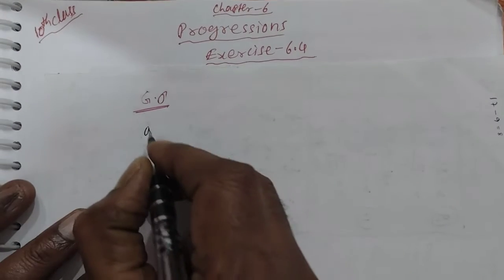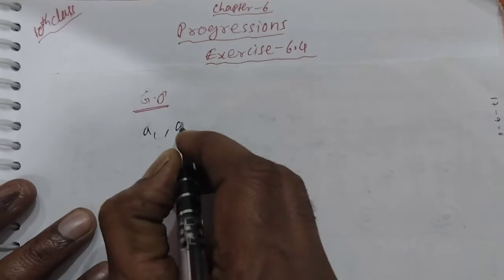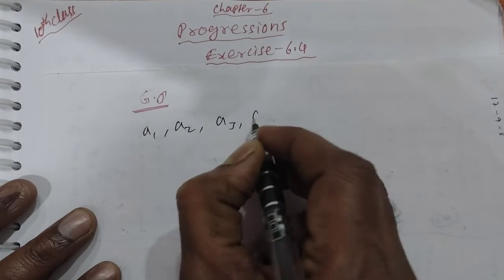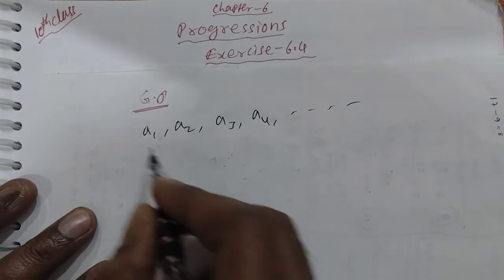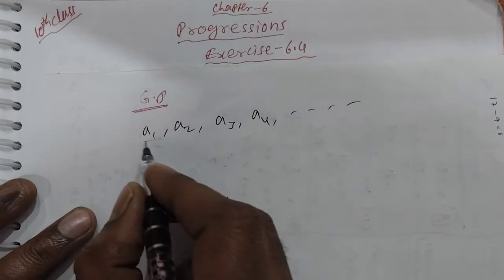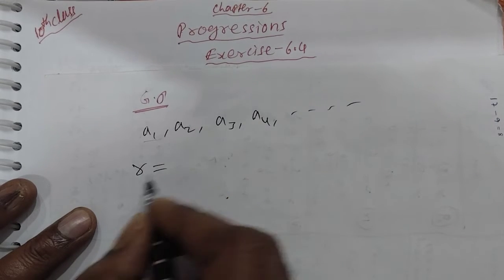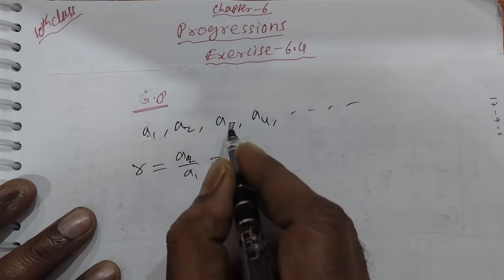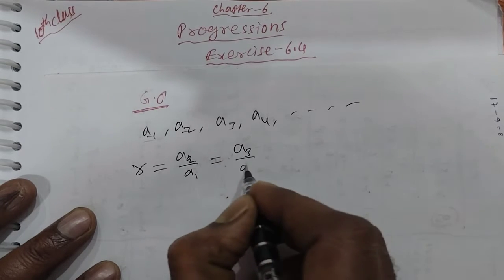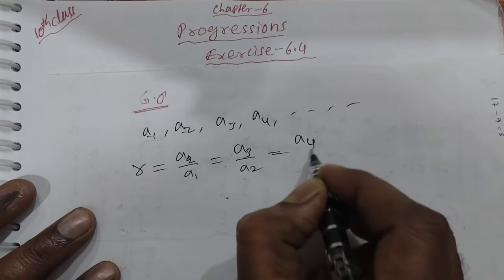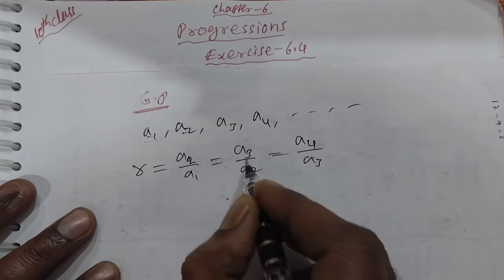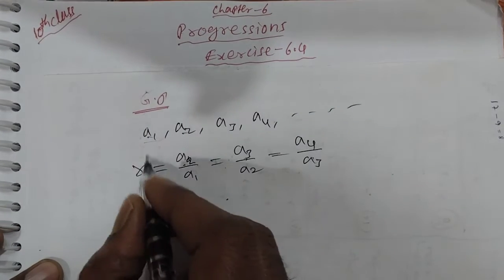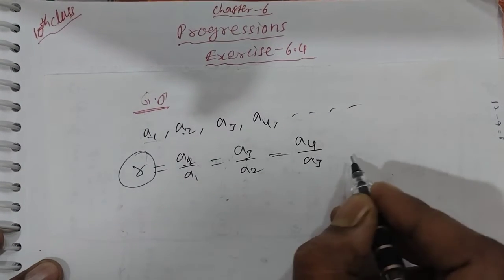In a Geometric Progression, we have terms A1, A2, A3, A4 and so on. The common ratio R is equal to A2 by A1, which equals A3 by A2, which equals A4 by A3. If all these ratios are equal, it is a GP.